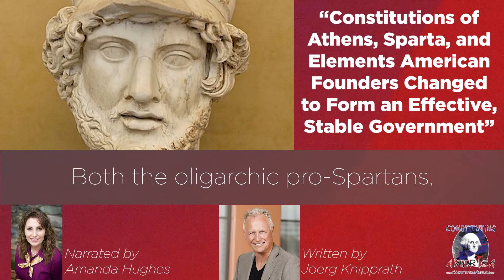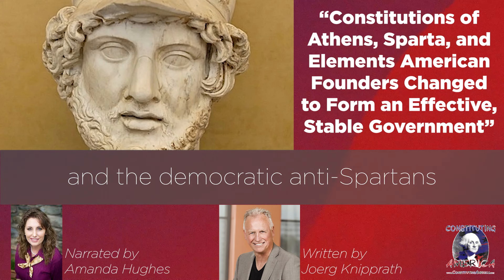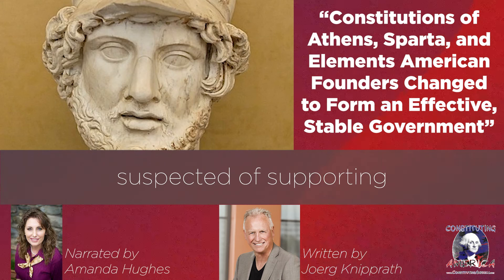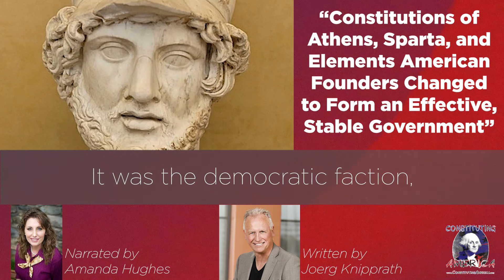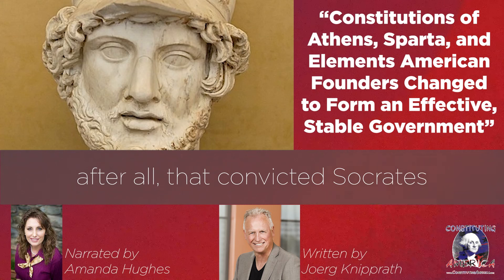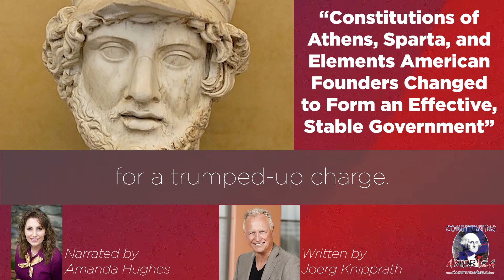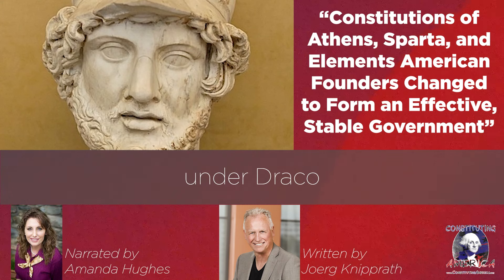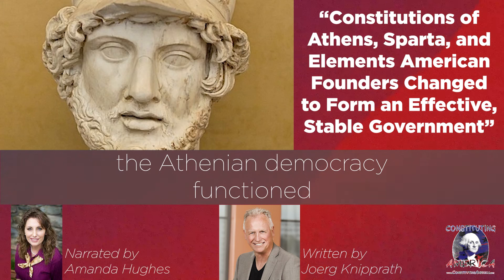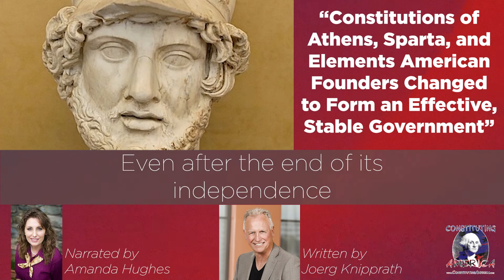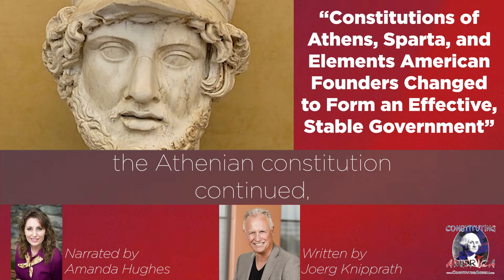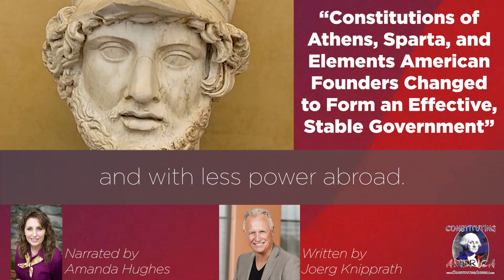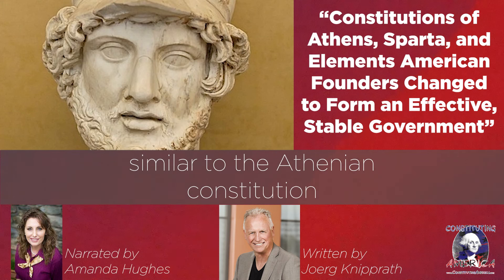Both the oligarchic pro-Spartans, such as the Thirty Tyrants, and the Democratic anti-Spartans seized the property of defeated political rivals and resorted to death for people suspected of supporting those defeated rivals. It was the Democratic faction, after all, that convicted Socrates and sentenced him to death on a trumped-up charge. All of that said, one must not forget that between the initial democratic stirrings under Draco and the Macedonian occupation, the Athenian democracy functioned for three centuries. Even after the end of its independence as a city-state, the Athenian constitution continued, albeit in modified form and with less power abroad.